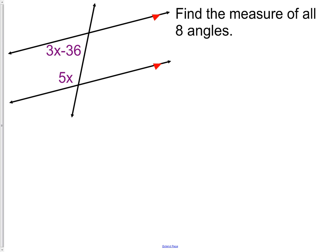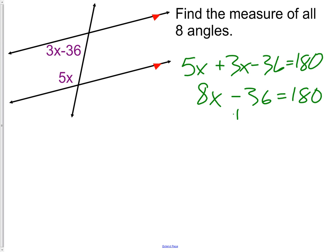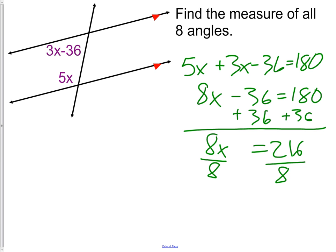Here's one for you to try. Make sure you pause and solve this question, and then come back to check your answer. What we could use in this one is the fact that they are consecutive interior, meaning they are going to add up to 180 degrees. 3x and 5x make 8x. Move the 36 to the other side. And you get 8x equals 216. Next, divide by 8. And finally, you have x equal to 27.